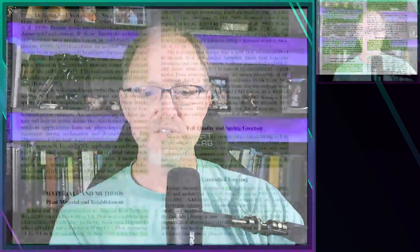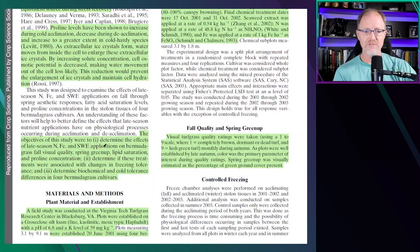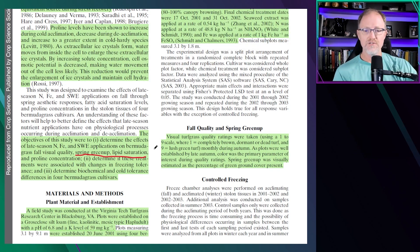The objectives of this study were to determine the effects of late season nitrogen, iron, and seaweed extract applications on Bermudagrass fall visual quality, spring green up, lipid saturation, and proline concentration, and to determine if these treatments were associated with changes in freeze tolerance.